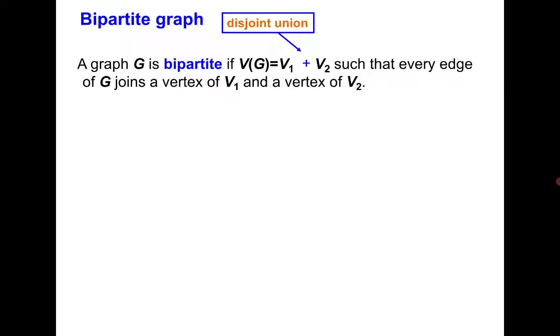Next is bipartite graph. A graph is bipartite if you can partition the vertex set as V1 and V2 such that every edge has one endpoint in V1 and the other endpoint in V2. Something like this. So let's say you draw it. This is my V1 and this is my V2.